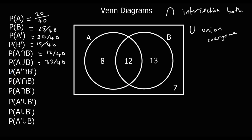Now we've got the probability of not A and not B — the intersection of them both. Where is it both not A and not B? The only place it's both not A and not B is the outside. So not A covers those two sections and not B covers those two sections, and the only place that satisfies both is the outside: 7 out of 40.